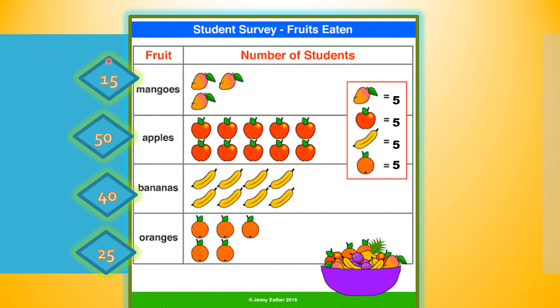Now let's go to the opposite consideration. Which group of fruits was most liked by this group of students? Most considers greatest or more. If you said apples, you are absolutely right. This group of students has eaten 50 apples, so that means that apples are the students' favorite because they've eaten the greatest amount.